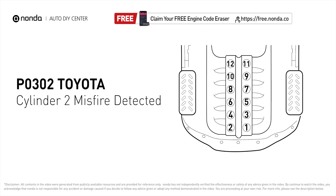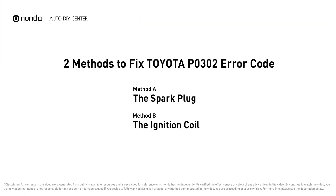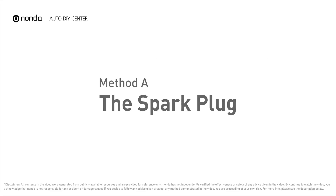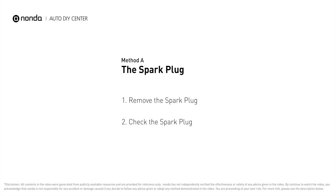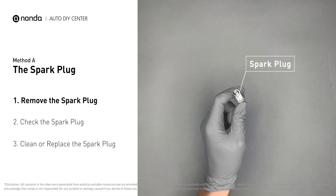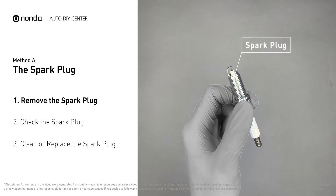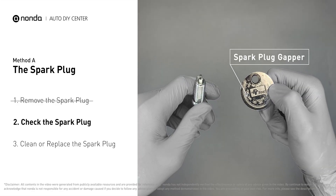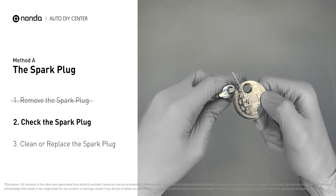Here are two of the most practical solutions to fix Toyota's P0302 error code. Method A: the spark plug. The spark plugs are located at the engine end of the wires, under the plug covers that attach them. First, carefully remove the spark plug. Use a spark plug gapper to check the spacing of the spark plug.